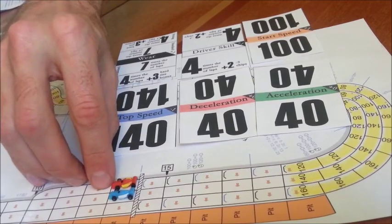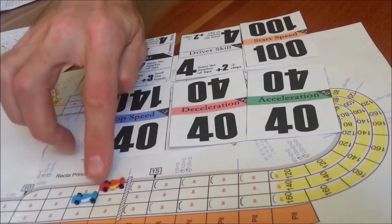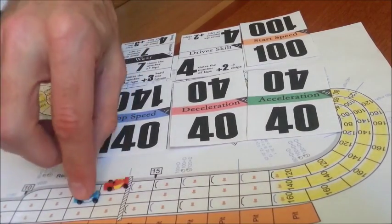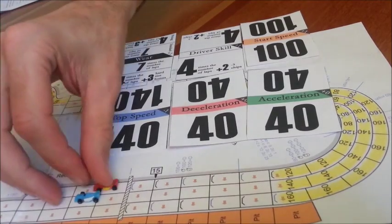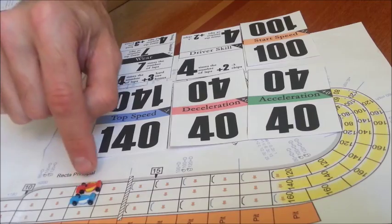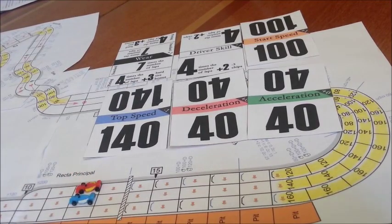If we both cross the line at the same time, then it's whoever's traveled the farthest across the line. So if the red car crossed the line first and went there, but I crossed the line second but went all the way there, I would win. If we were in the same spot, then it's whoever's on the inside of the track, which in this case would be red. And that usually just means it comes down to whoever crossed the line first. That's the game.